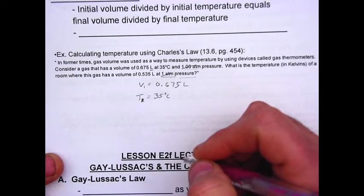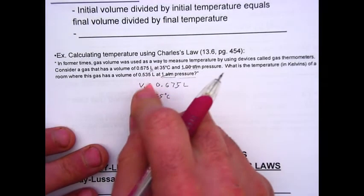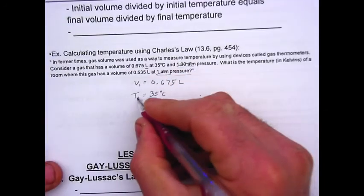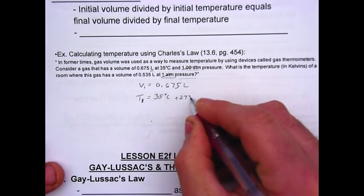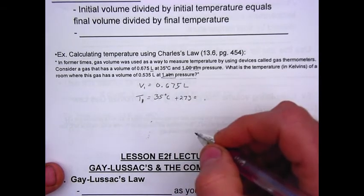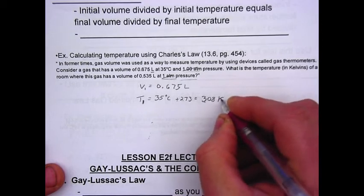Now I know that all temperatures must be in kelvins. Therefore, I'm right away going to add the 273 to this in order to get the units in Kelvin. So 35 plus 273 gives me 308 Kelvin.